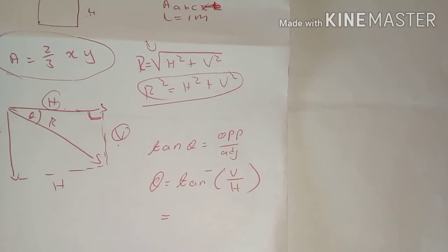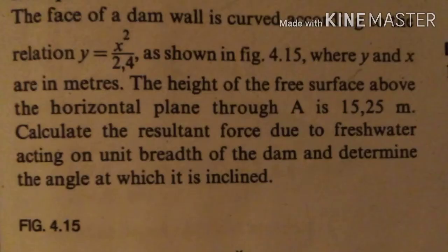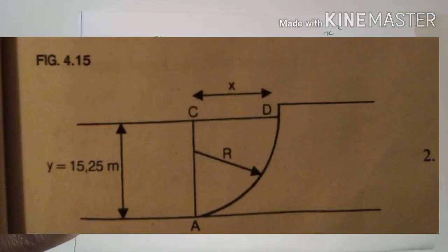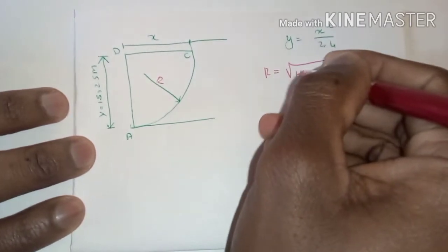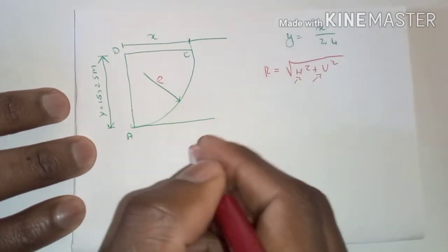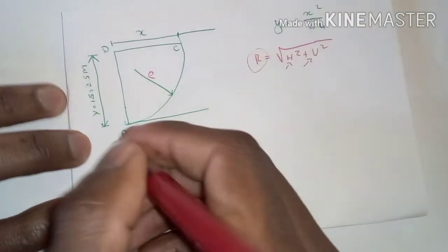We are going to do an exercise from the textbook which reads: the face of a dam wall is curved according to the relationship y = x²/2.4, where y and x are in metres. The height of the free surface above the horizontal plane through point A is 15.25 metres. Calculate the resultant force due to fresh water acting on the unit breadth of the dam and determine the angle at which it is inclined. We need to find H and V to then calculate R.